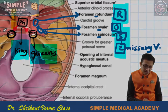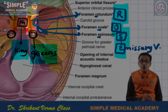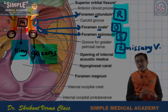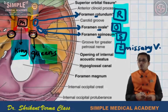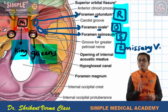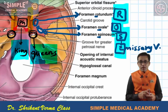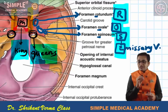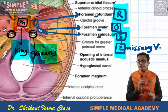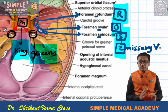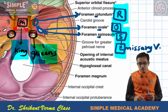On each side of the pituitary gland, the space lodges the cavernous sinus. Through the lateral wall of the cavernous sinus, cranial nerves 3, 4, V1, and V2 pass. The direct contents of the cavernous sinus include the internal carotid artery along with the sixth cranial nerve. We will discuss these structures one by one and make notes.